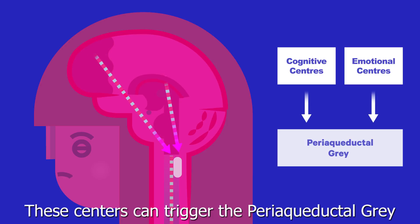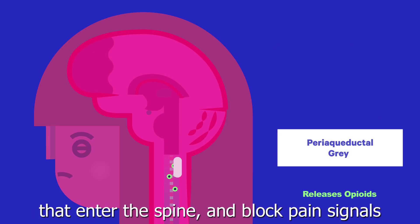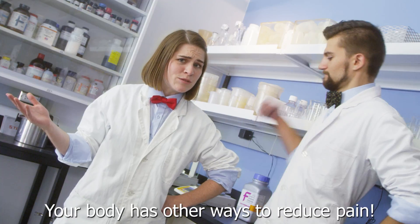These centers can trigger the periaqueductal gray, which releases opioids that enter the spine and block pain signals. Your body has other ways to reduce pain.